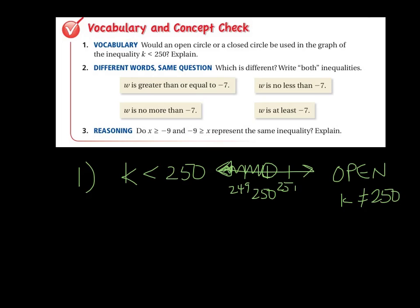All right, number two, which is different, right? Both inequalities. So we have two, apparently two different inequalities. We just have to read through here and figure out what we have. w is greater than or equal to negative 7. And then we have w is no less than negative 7. w is at least negative 7. And w is no more than negative 7. All right, so this first one here, greater than or equal to, is greater than or equal to negative 7. That one's very straightforward because you have the words greater than or equal to in there.